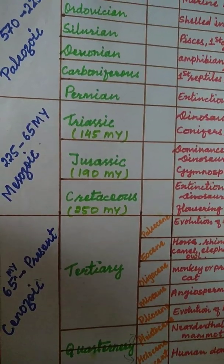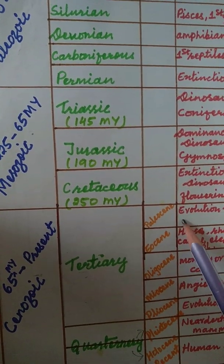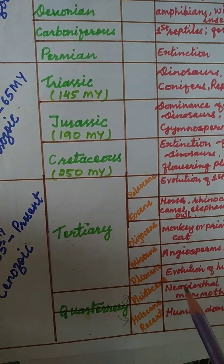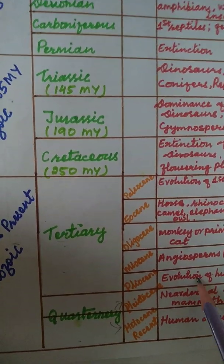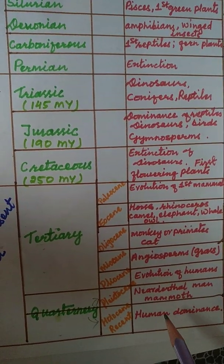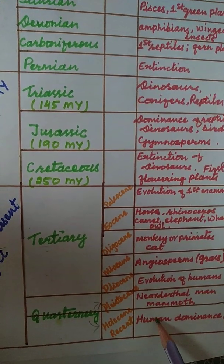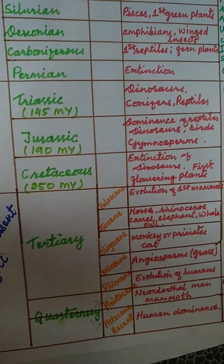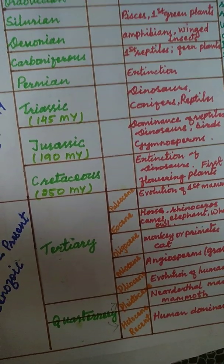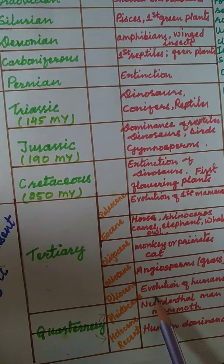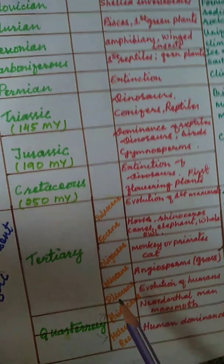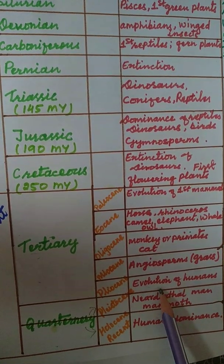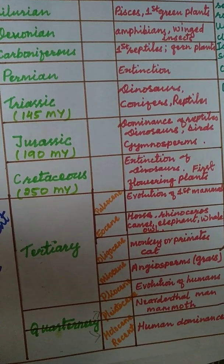Cenozoic Era is called the Era of Mammals because mammals started living and are still developing. Human beings originated two million years ago in the Pleistocene epoch, under the Quaternary period. Human beings have dominated the Earth's surface since that time — in the recent Holocene period. The caveman appeared at that time, marking the start of human evolution, two million years ago in the Pleistocene epoch.